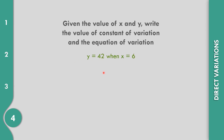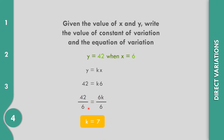How about number 4? y equals 42 and x equals 6. Let us replace in y equals kx. So 42 equals k times 6. Divide both sides with the numerical coefficient of k, that is 6. Cancel 6. That leaves k, and 42 divided by 6 is 7. So k equals 7. We have now the constant of variation. The equation of variation: replace k by 7, so y equals 7x.